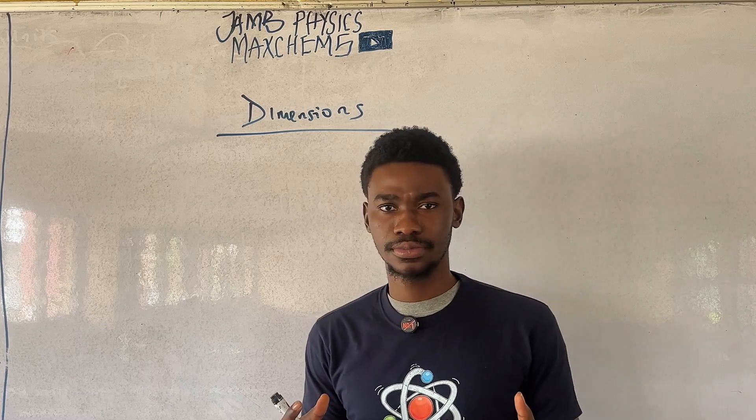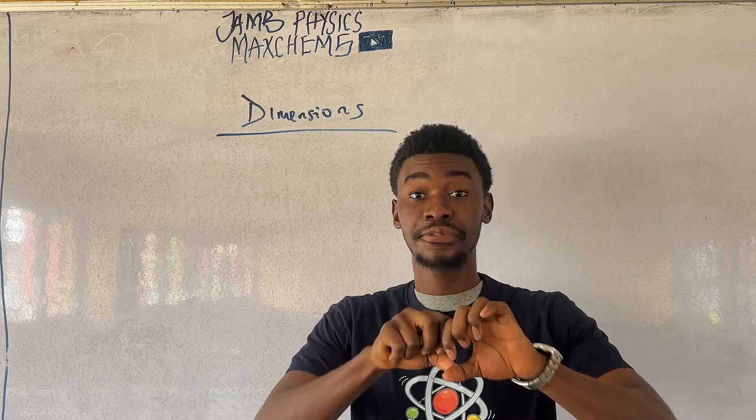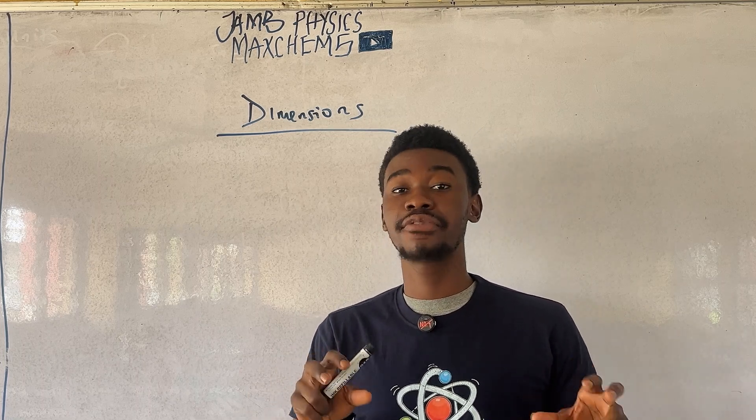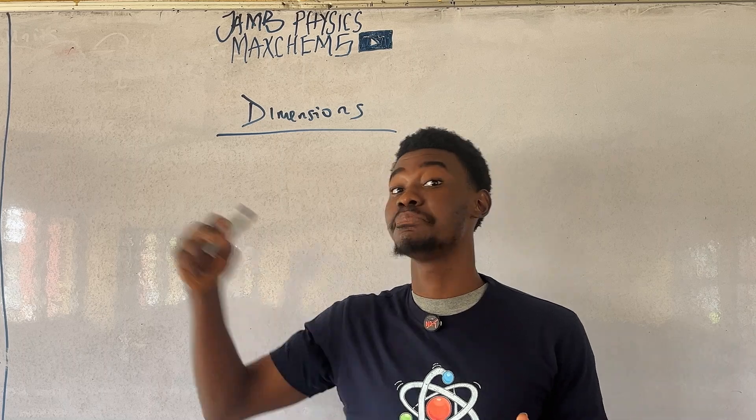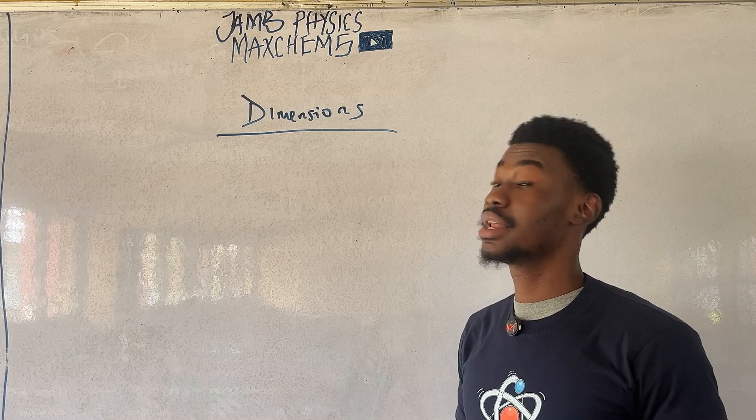Anything you can measure properly should always have a dimension. Any physical quantity, let me be specific. Every physical quantity that is measurable must have a dimension. Now, let me give you an example.